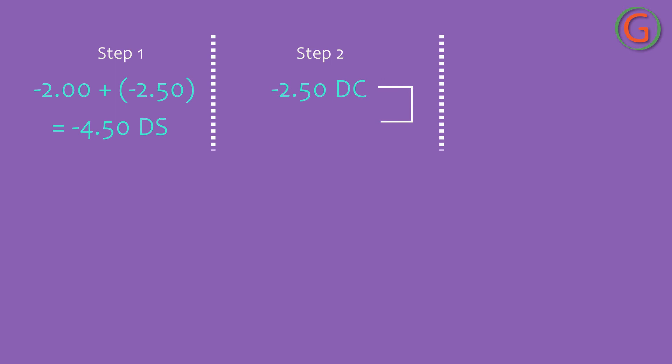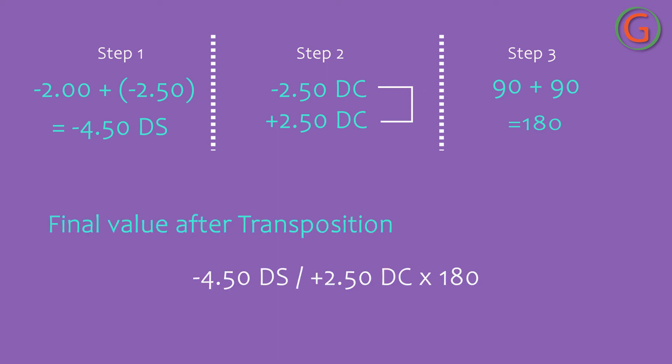Step 2: Change the sign of the cylindrical power — minus 2.50 diopters becomes plus 2.50 diopters. Step 3: Change the cylindrical axis by 90 degrees. 90 plus 90 degrees is equal to 180 degrees. Hence the final value after transposition is: minus 4.50 diopter spherical with plus 2.50 diopter cylindrical at axis 180 degrees.